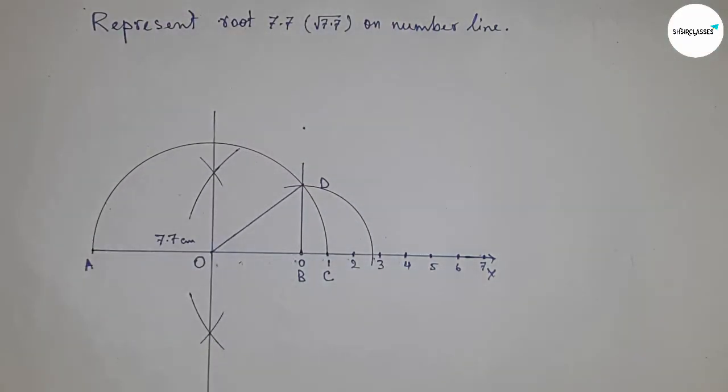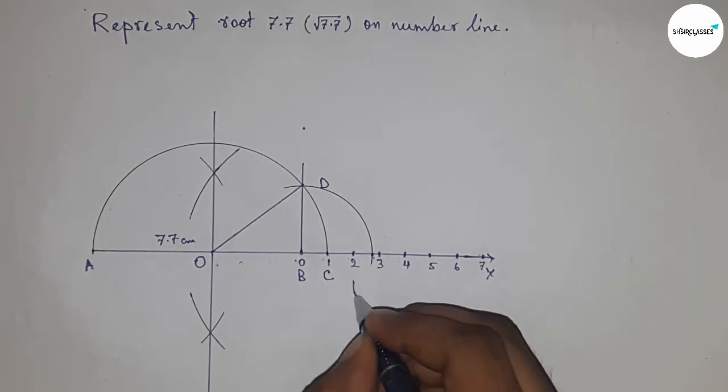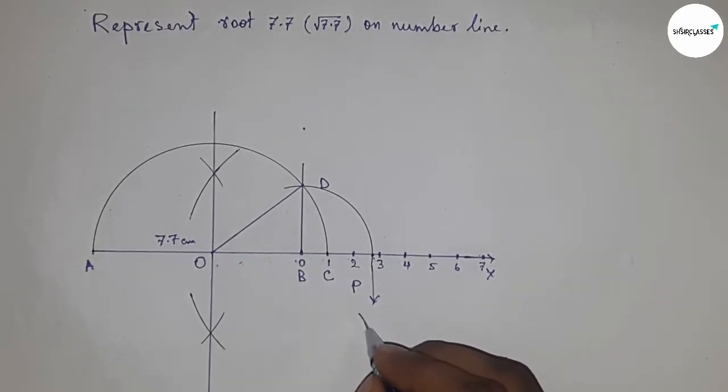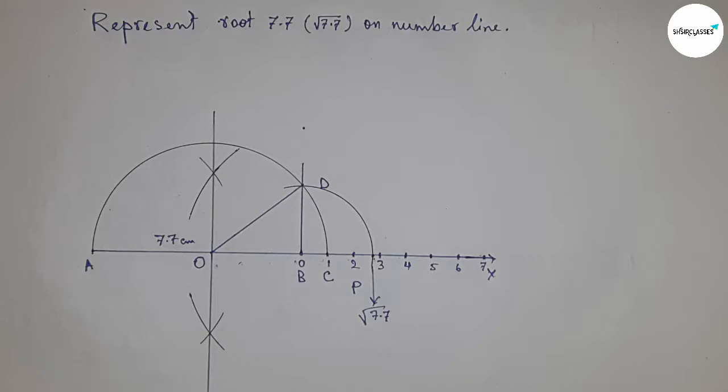This is the representation of √7.7 on the number line.